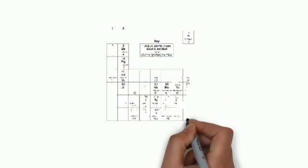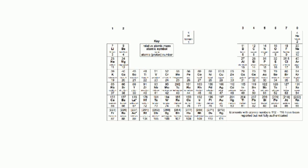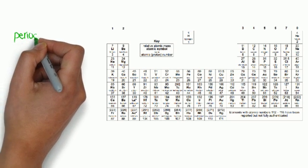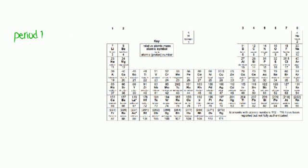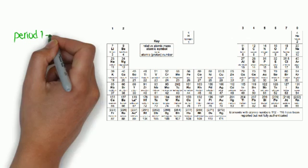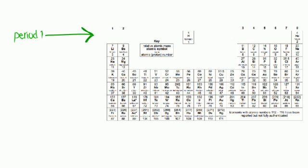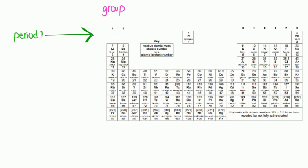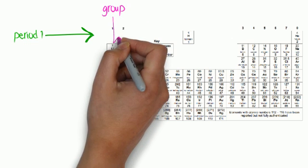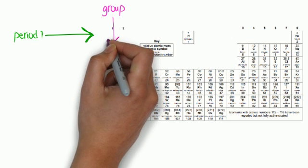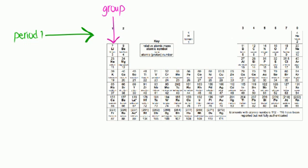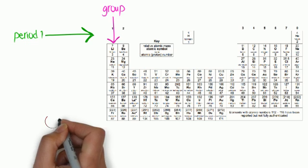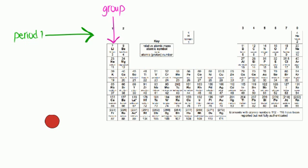Let's look at the periodic table. The rows are called periods, and the columns are called groups. The bottom number, the atomic number, tells us how many protons the element has. In an atom, this corresponds to how many electrons the atom has.